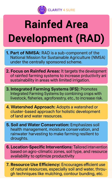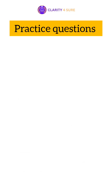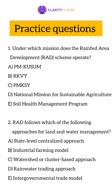RAD adopts a cluster-based or watershed approach to ensure the integrated and scientific management of natural resources. Watershed planning includes treating the entire landscape to enhance soil moisture, groundwater recharge, and vegetative cover, thus improving overall farm productivity.